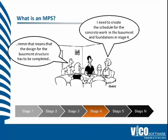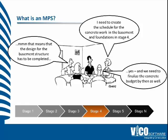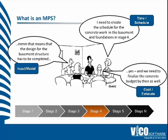And that prompts the designer — that means that my design for the basement structure has to be complete at stage four. And the estimator then says, yes, and we actually need to finalize the concrete budget by then as well because we've got to bid that. So at certain points in time, we all know from our own discipline what we require or what would be desired. And from an input from a model sense and then the connections to time and cost, it's really very important to understand how they're going to converge and how they're going to always be complete as a 5D data set at each stage.